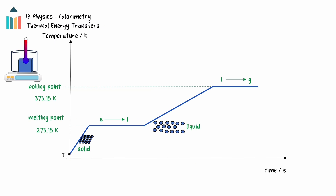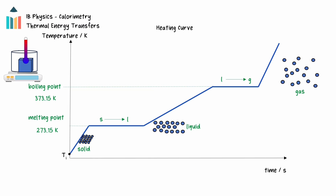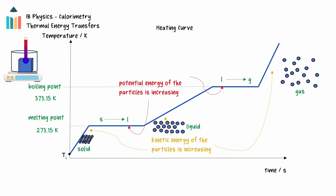This phase change will continue until the entire mass of the liquid has changed phase into a gas. The process again repeats, and the energy being transferred will go towards increasing the kinetic energy of the particles. The temperature of the gas will increase linearly, assuming the container is closed. This graph of temperature as a function of time is known as a heating curve, and will have the same shape for every substance. It will show linear increases in temperature where the kinetic energy of the particles increases, and horizontal portions where the potential energy is increasing and a phase change is occurring. Different substances will have different temperatures at which these phase changes occur, but the overall shape of the graph will be the same.